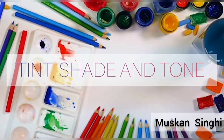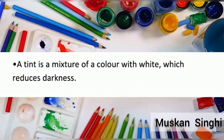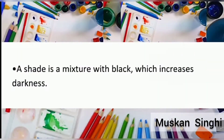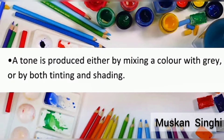In color theory, what is tint, shade, and tone? A tint is a mixture of a color with white, which reduces darkness. A shade is a mixture with black, which increases darkness. A tone is produced either by mixing a color with gray, or by both tinting and shading.